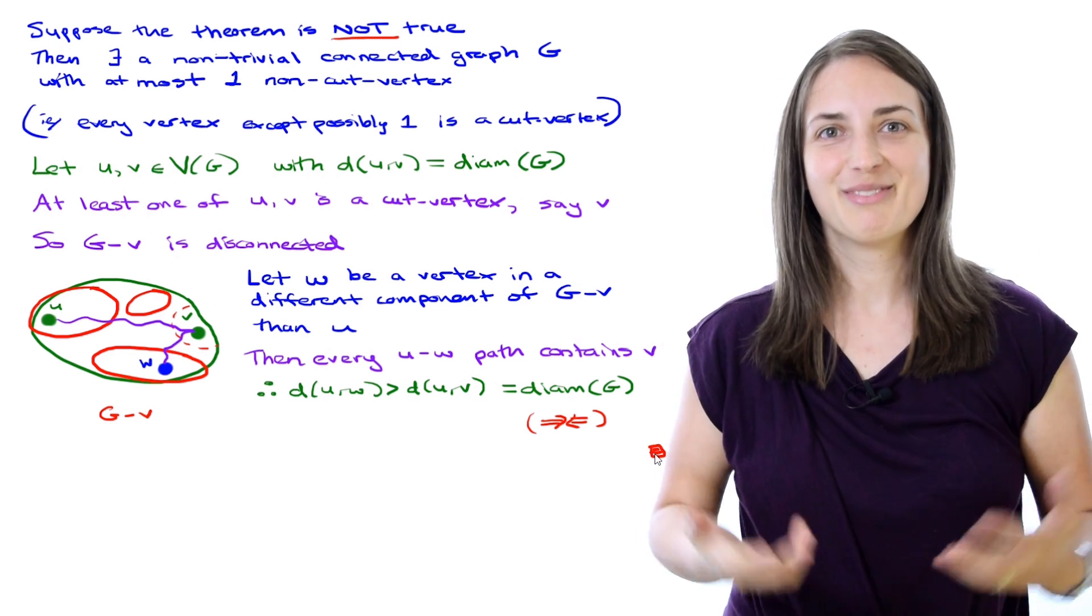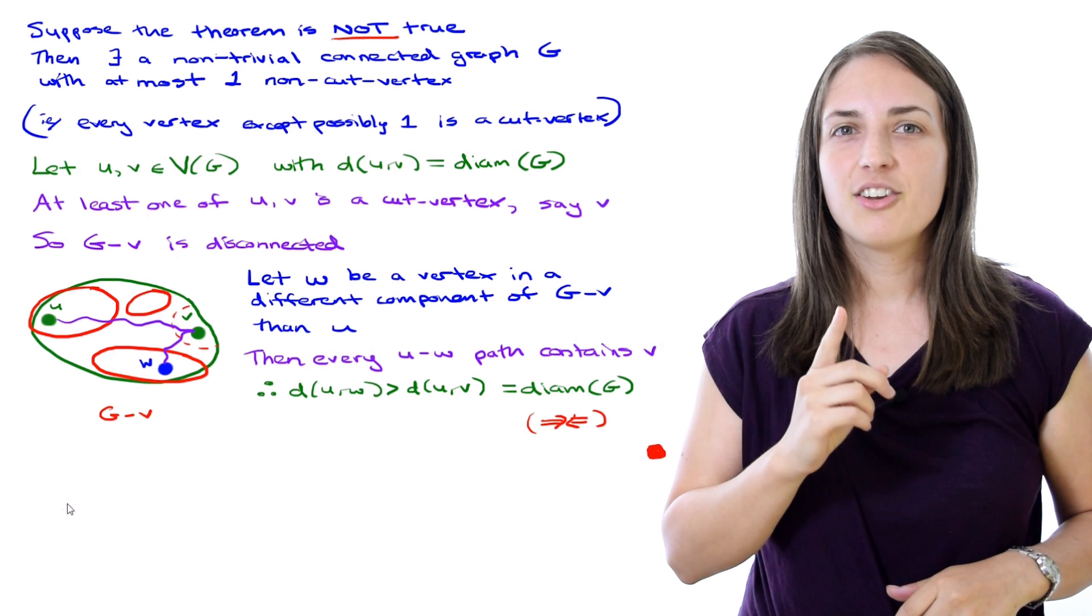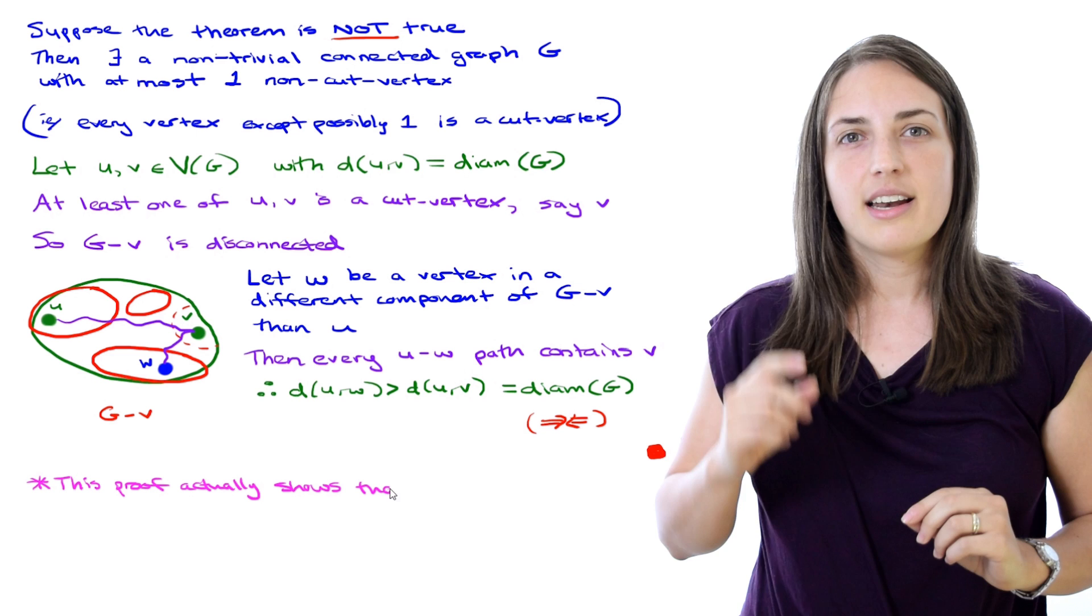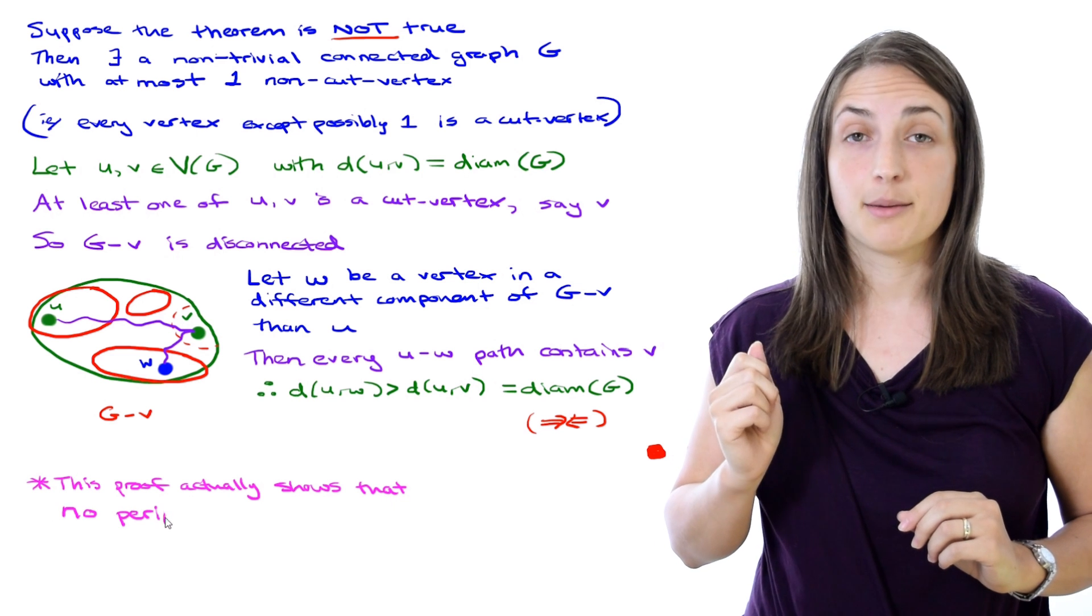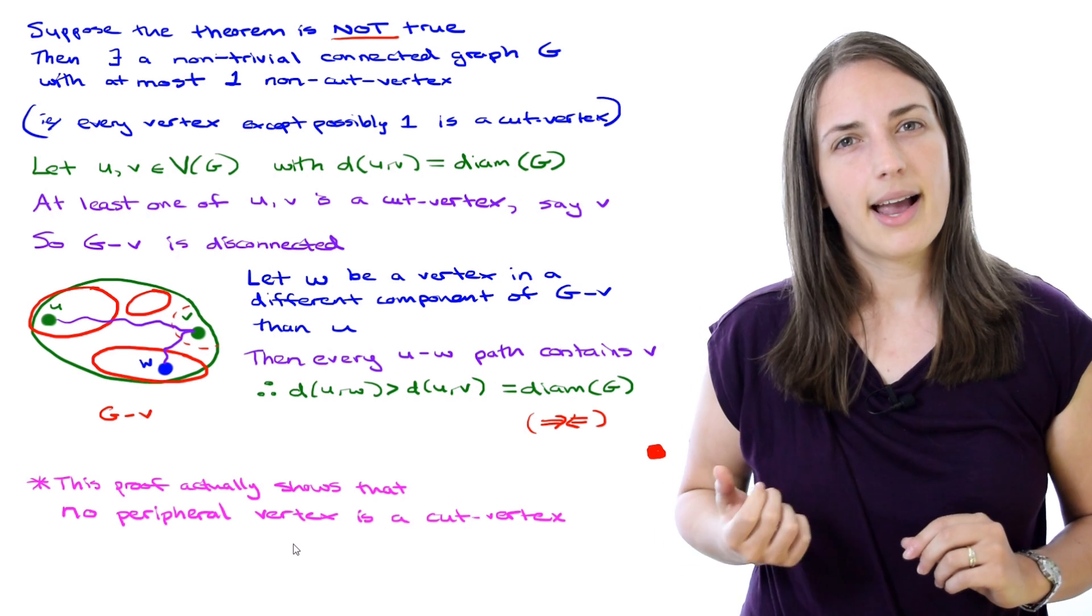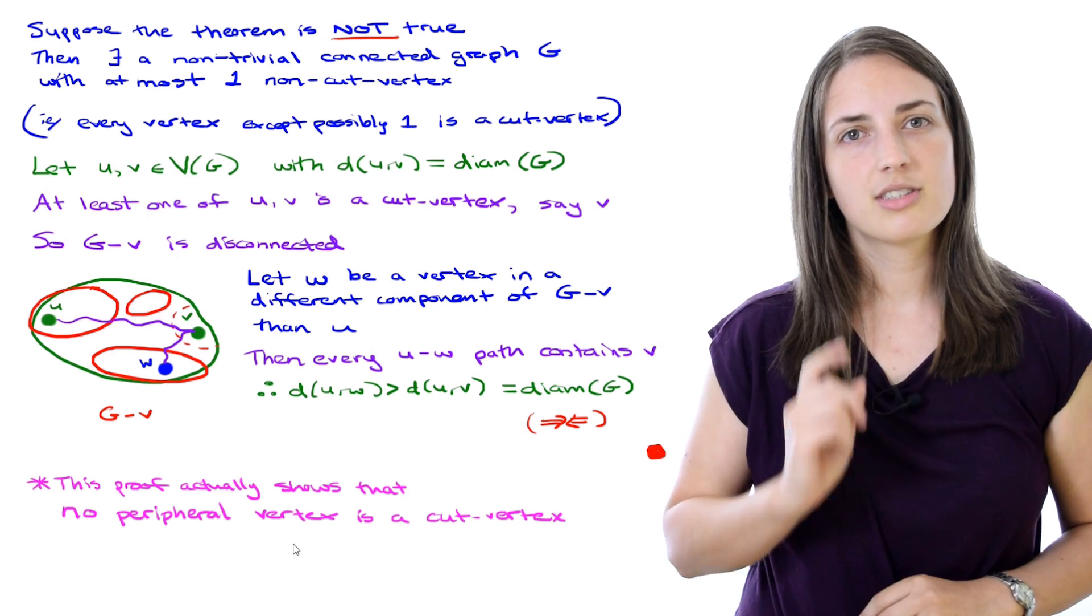In other words, it's true that the theorem is true. Now I'd like you to notice something. This proof actually showed that if you take any vertex that's a peripheral vertex, that vertex cannot be a cut vertex. That's what we actually showed within the proof here. So that's an interesting fact.